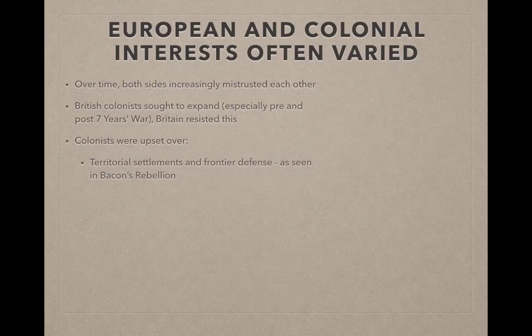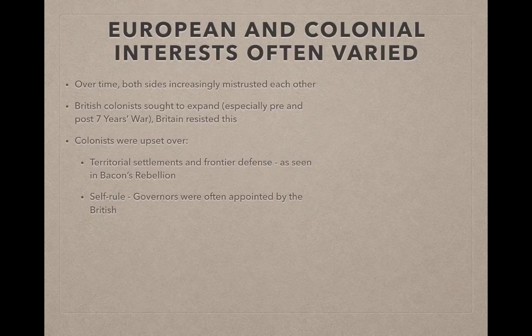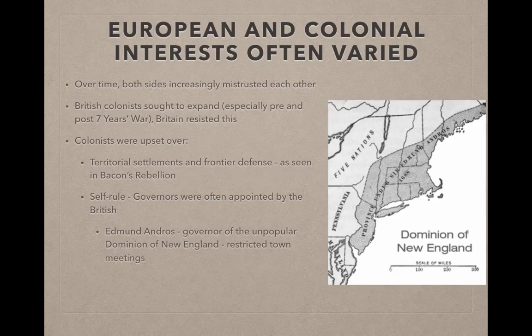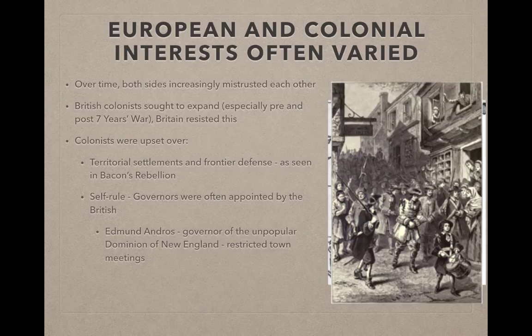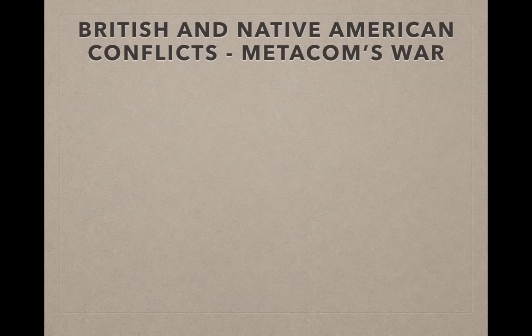We saw this in Bacon's Rebellion — many colonists living outside of Jamestown wanted protection from Native Americans on the frontier. Colonists were also upset over self-rule. Many governors of the British colonies were appointed by the British, so colonists had no say in the governors like they did in colonial legislatures. An example is Edmund Andros, governor of the very unpopular Dominion of New England, which combined several colonies and restricted town meetings. Thankfully for the colonists, this only lasted a short time — Andros was captured and thrown out. Colonists were also upset about trade; the Navigation Acts stated they could only trade with Britain, not France or Spain, and colonists often resisted by smuggling.